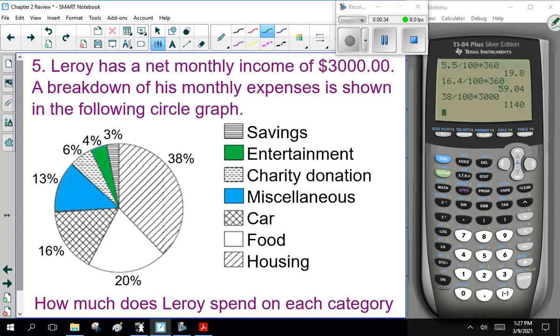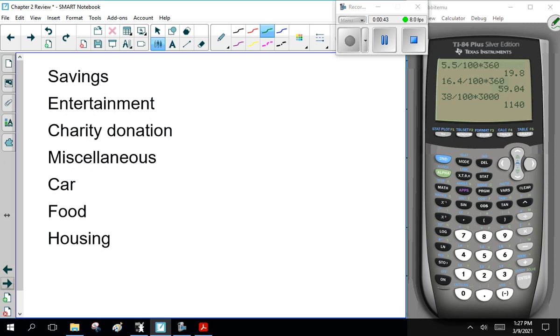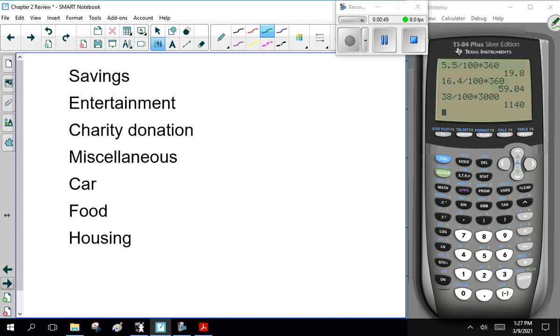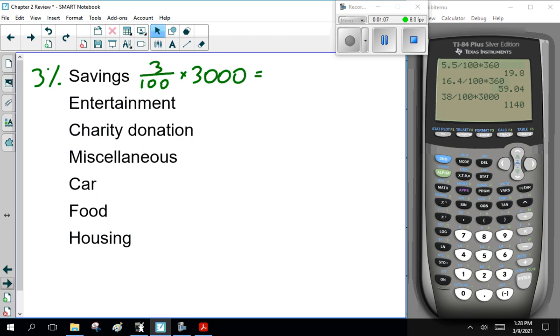Now, note his total is $3,000. So he spends 3% on savings. Let me show you. Savings is 3%. Now, remember 3% is 3 out of 100. That's what percent means, divided by 100, times the total, or times the income, is $3,000. So how much does he spend? 3 over 100 times 3,000 equals $90. So $90 in savings.